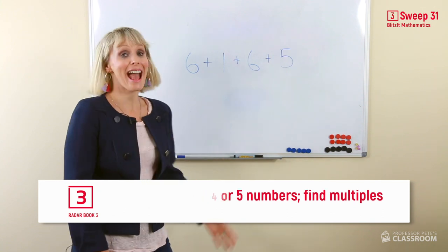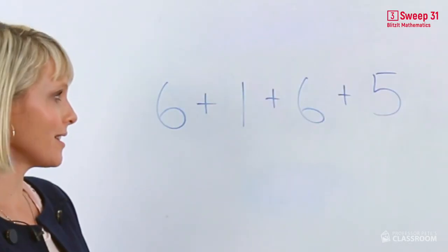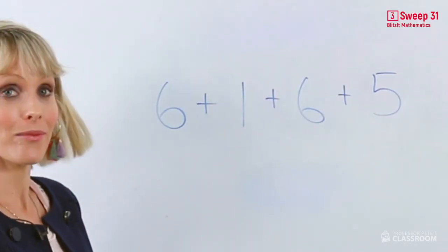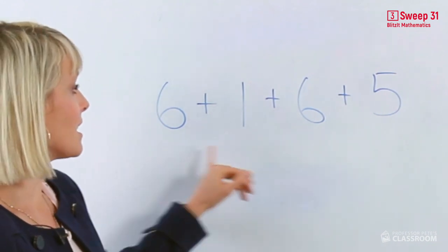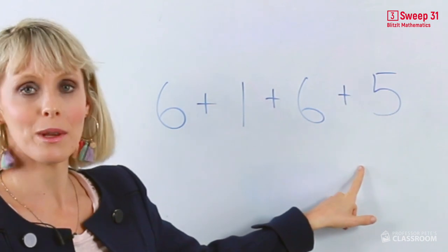Here we have four numbers that we're adding together. What can you notice about these numbers? Well, I can see there's a six and a six, but there's also a one and a five we need to add as well.